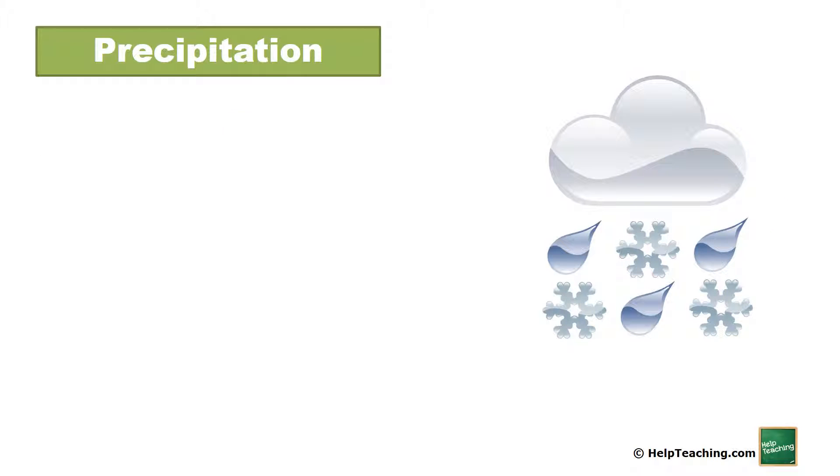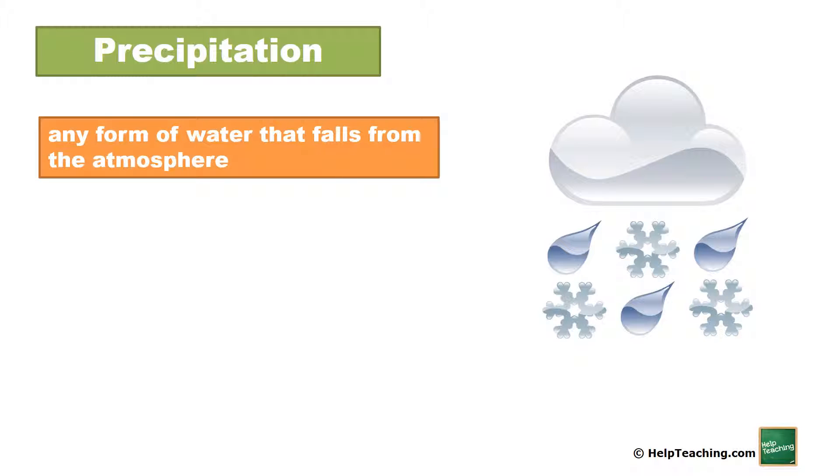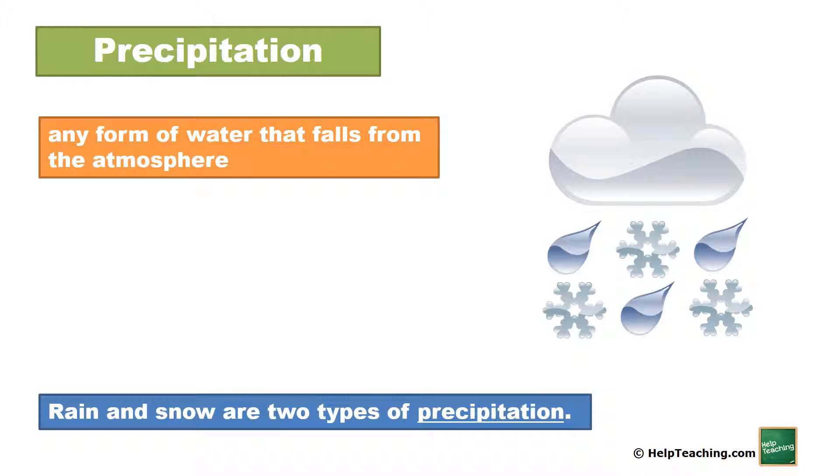Precipitation. Any form of water that falls from the atmosphere. Rain and snow are two types of precipitation.